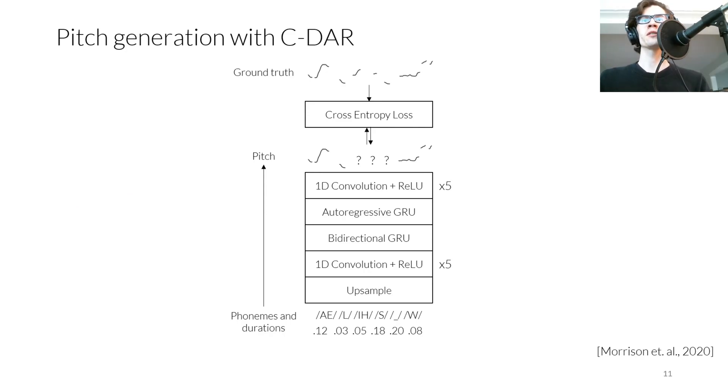Our pitch generator, the controllable deep autoregressive, or CDAR model, was proposed in our prior work. CDAR is a slightly deeper variant of our duration generator, and also performs masking during training to enable context awareness. We use autoregressive sampling with a categorical loss function to account for the multimodality that occurs because there are multiple ways to say the same sentence.